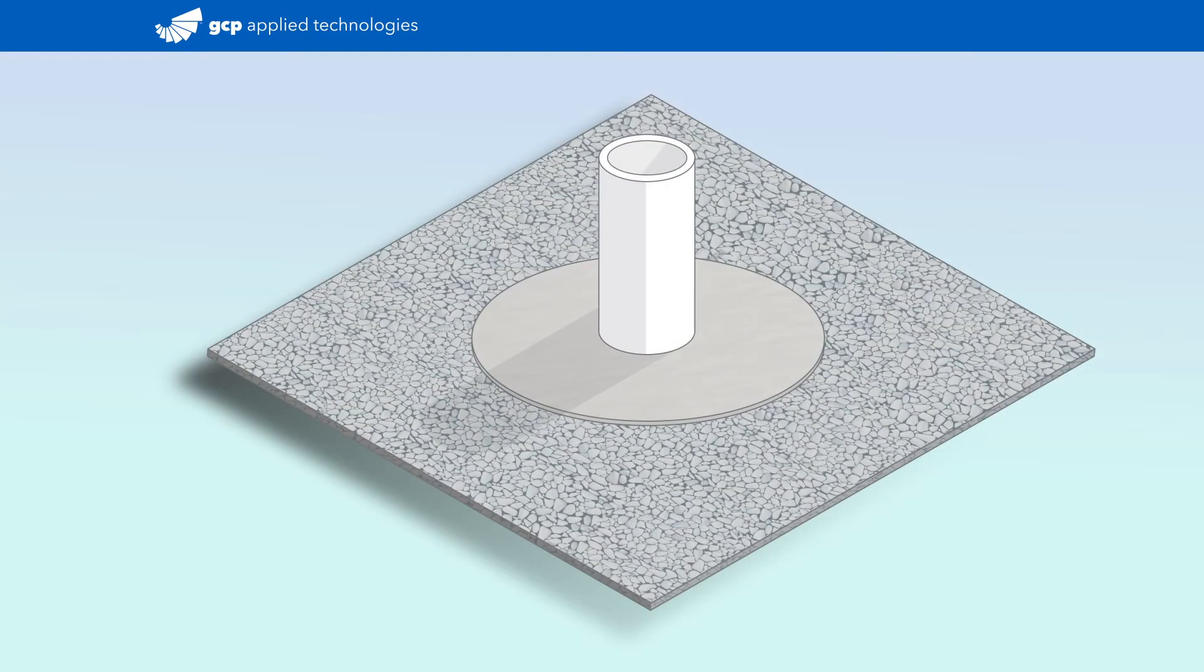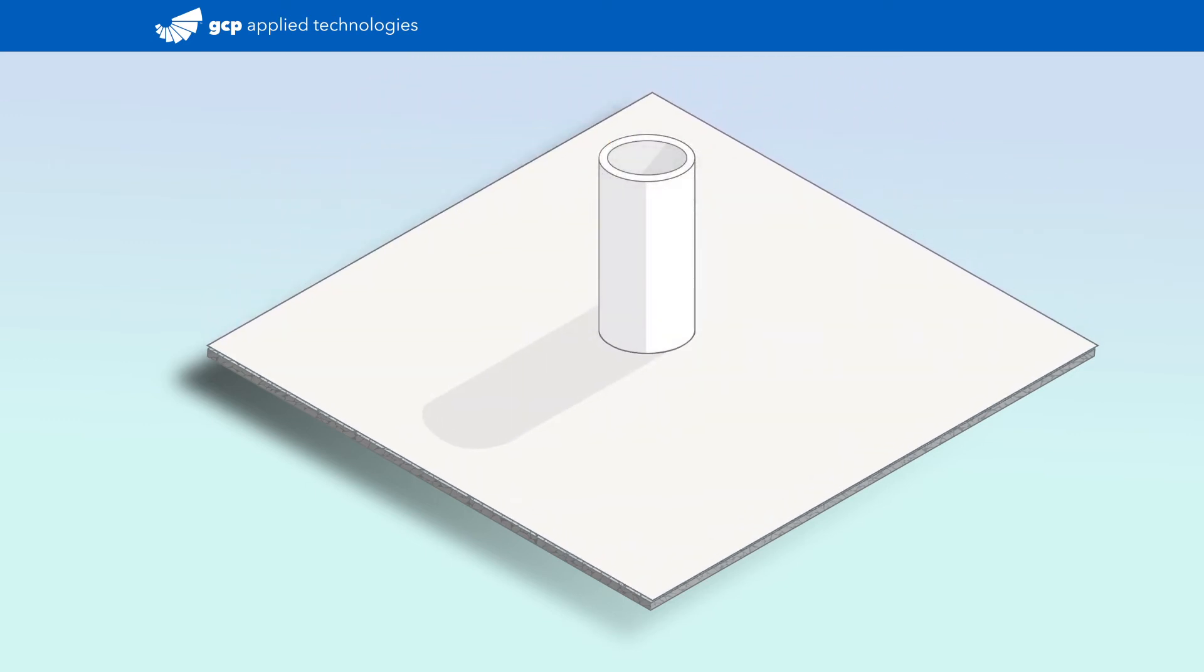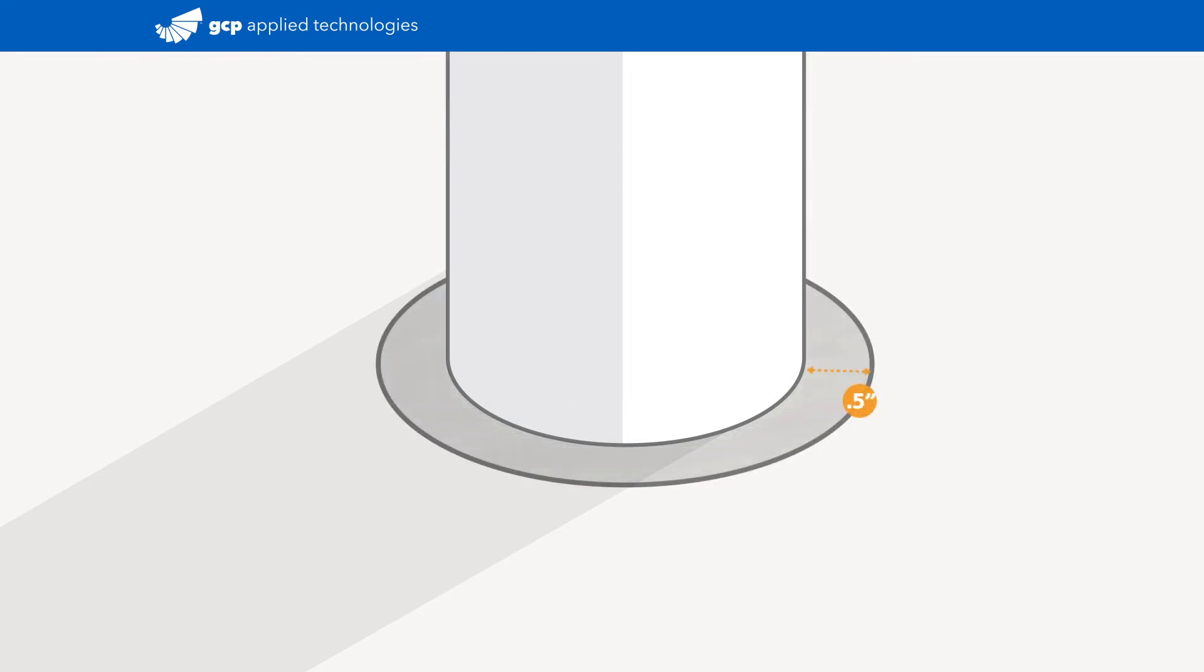Begin by cutting the pre-proof membrane to within a half inch of the penetration, ensuring it isn't riding up the penetration. If the membrane is riding up the penetration, trim the excess. Ensure the gap between the membrane and the penetration doesn't exceed half an inch.